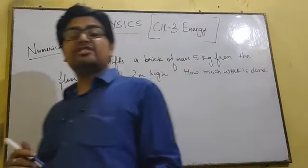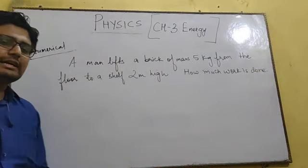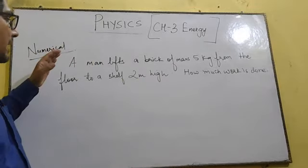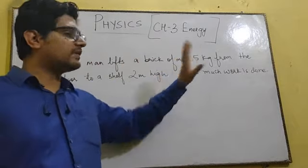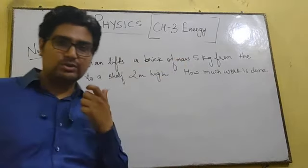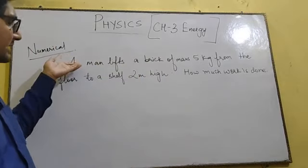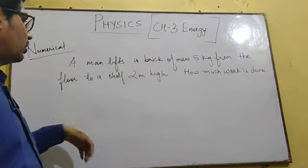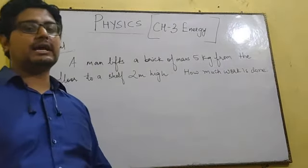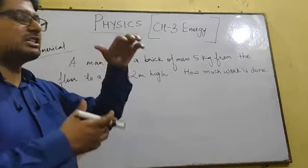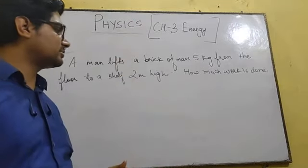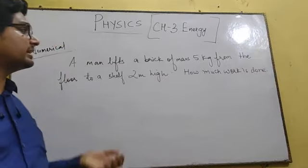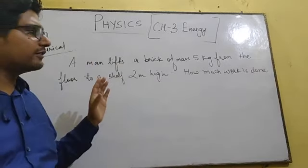There is one more numerical on work which I want you to solve and show the solution. A man lifts a brick of mass 5 kg from the floor to a shelf at a height of 2 meters, so displacement is 2 meters. Note down this question and solve it on your own using the formula of work.